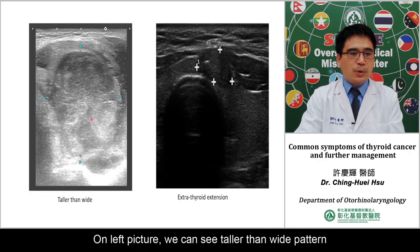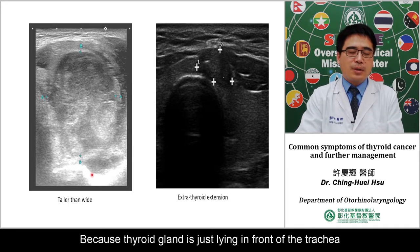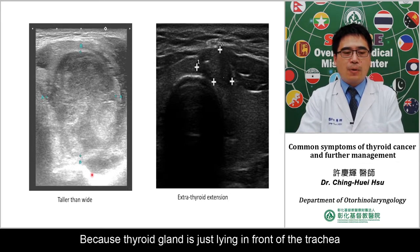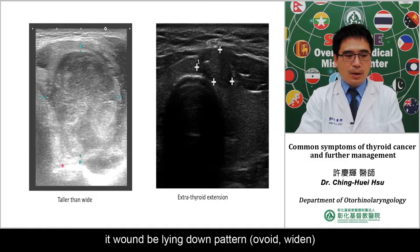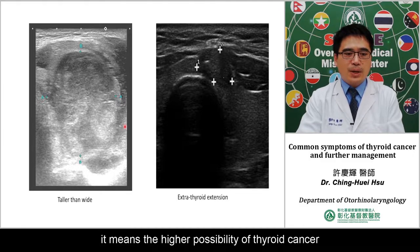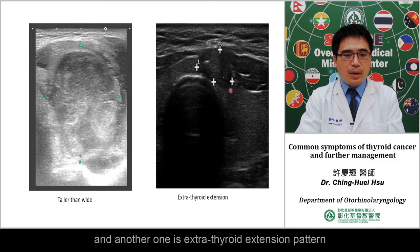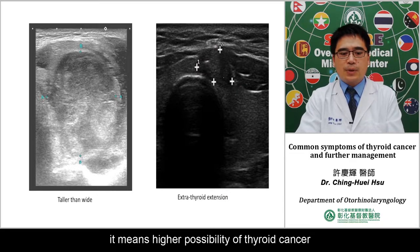In this picture, we see the 'taller than wide' appearance. Because the thyroid gland is just in front of the trachea, usually when we see a thyroid nodule it lies flat. When we see the taller-than-wide picture, it means a higher possibility of thyroid cancer. Another feature is extra-thyroidal extension, which also indicates the possibility of cancer.